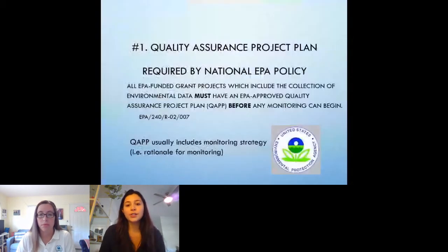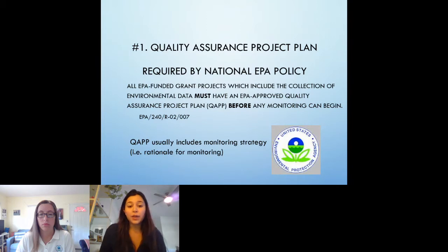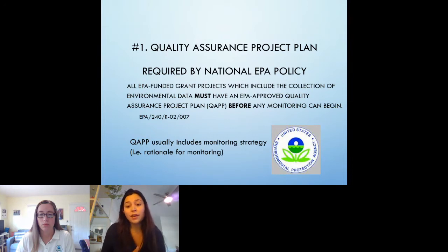The first one, Quality Assurance Project Plan, also known as QAAP, is required before any monitoring begins using your 106 grant funds. This document is an important resource for guiding your field and lab procedures, ensuring the quality of the data that you produce, and sustaining your program by providing monitoring protocols for future staff members. These should be reviewed and updated at least every five years. If you end up adding a new monitoring location to your program or a new water quality parameter, you may update it sooner than that five-year deadline.